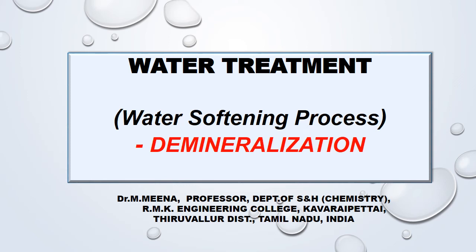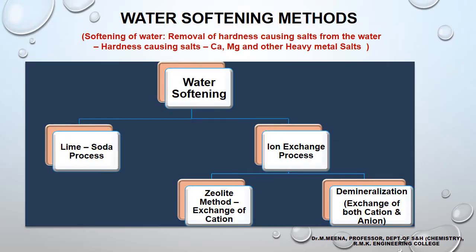Let us discuss about a method for water softening: demineralization. Before going into the method in detail, let us recall what is meant by softening of water — it is the removal of all the hardness-causing salts present in hard water. The salts which cause hardness are calcium, magnesium, and other heavy metal salts present in the water. Usually we highlight only calcium and magnesium salts because they are present in abundance in hard water.